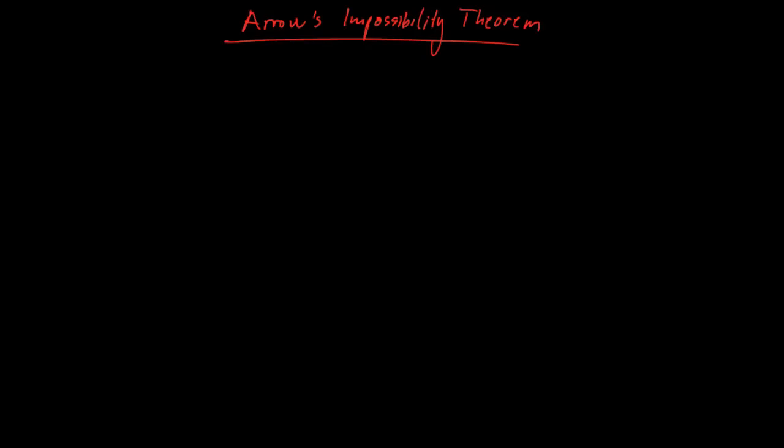So I'm going to talk about Arrow's Impossibility Theorem. And I'm going to divide this into three parts. First, I'm just going to give you an example of the theorem. The second thing I'm going to do is to give you a more formal statement. And lastly, I'm going to give some possible solutions or discussions of the theorem.